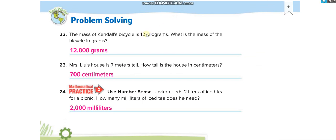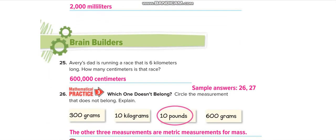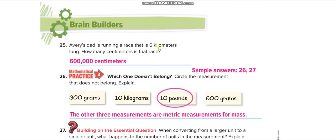Answers: 12 kilograms equals 12,000 grams; 7 meters equals 700 centimeters; 2 liters equals 2,000 milliliters. For a multi-step problem — 6 kilometers into centimeters — first convert to meters: 6 times 1,000 equals 6,000 meters. Then convert meters to centimeters: 6,000 times 100 equals 600,000 centimeters.